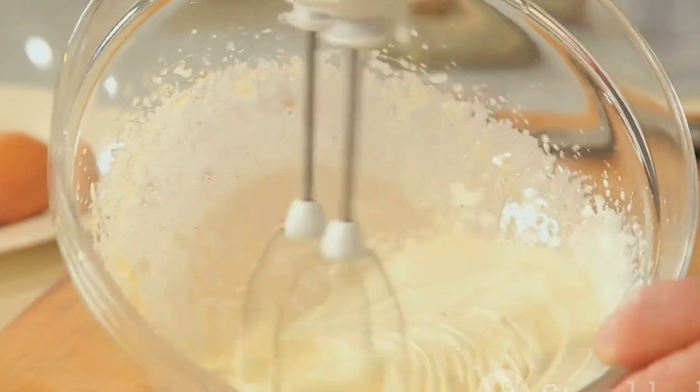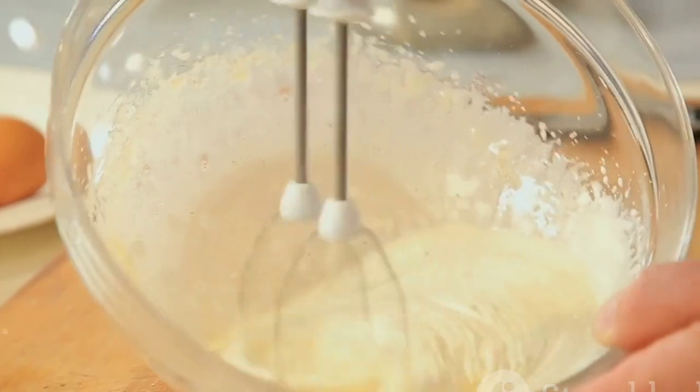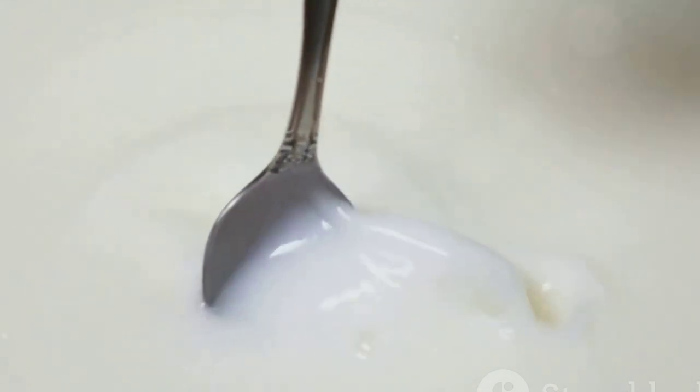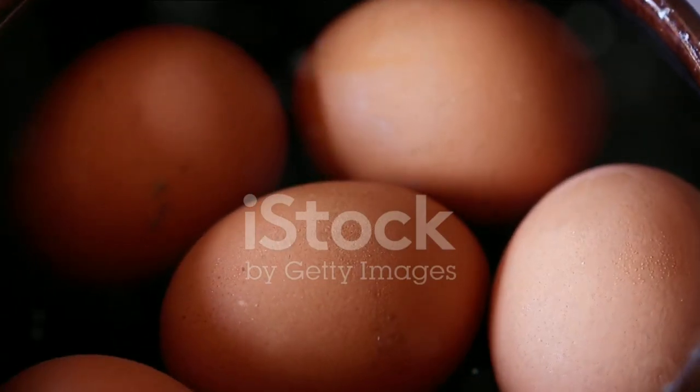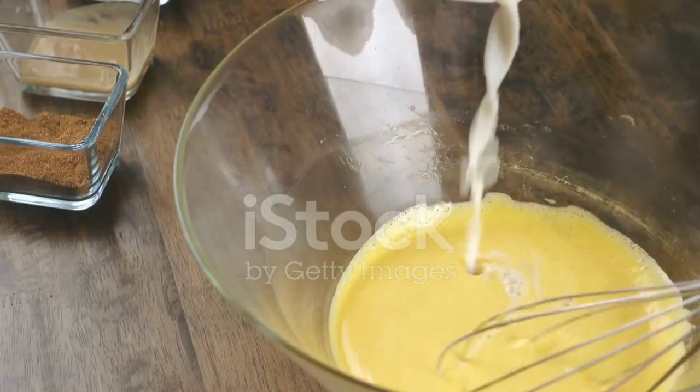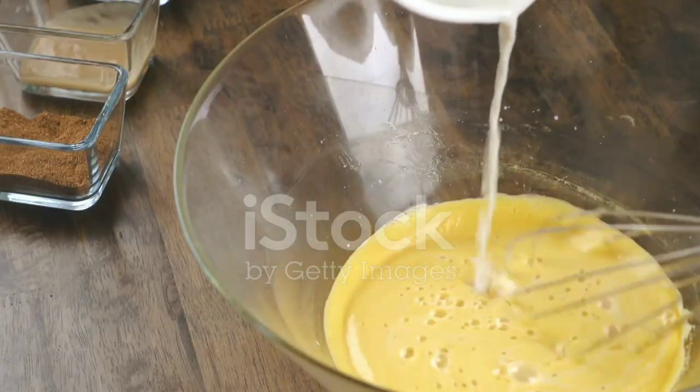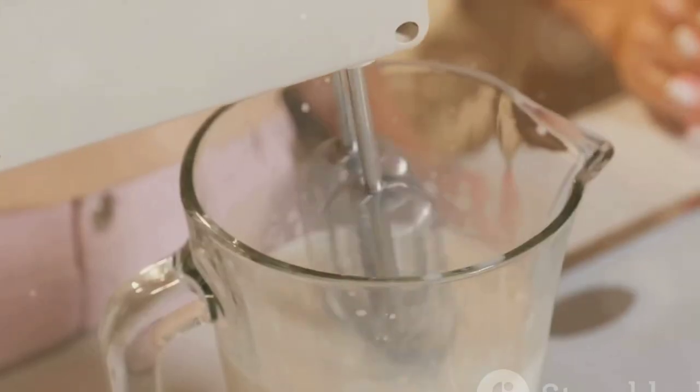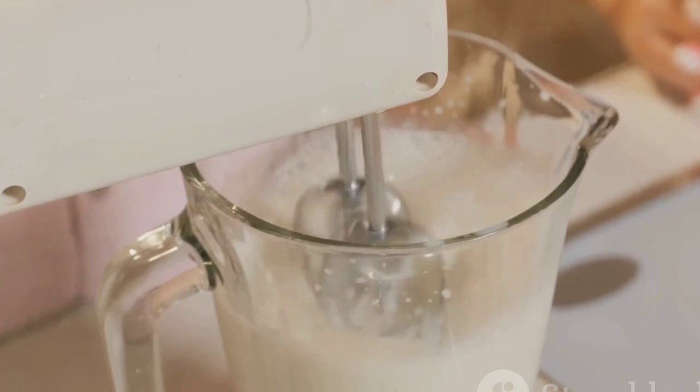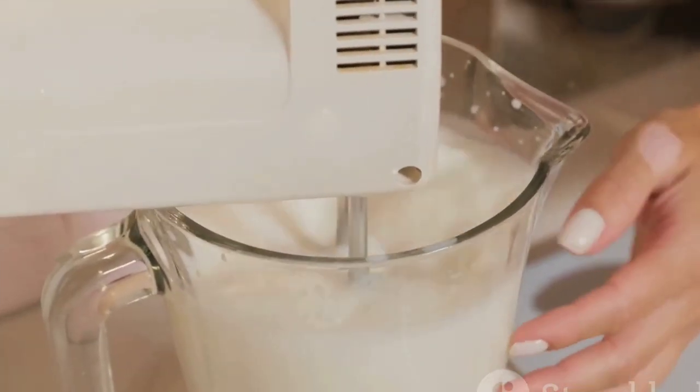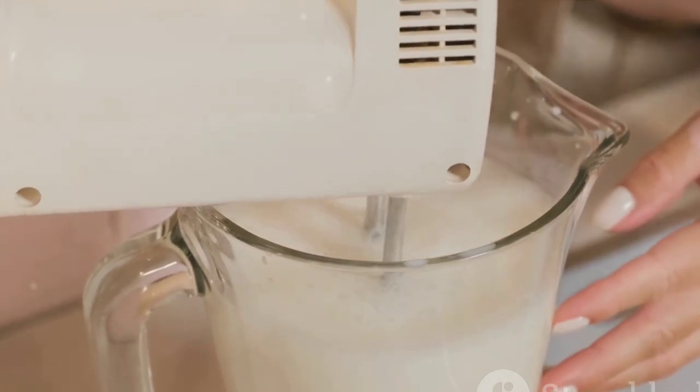Imagine for a moment the process of making eggnog. You start with a set of ingredients—milk, sugar, eggs, and spices. Each ingredient is distinct with its own unique characteristics. When you combine these ingredients, you create something entirely new, a delightful concoction that is more than just the sum of its parts. The final product is unpredictable, varying in taste and texture based on the proportions of the ingredients, the method of mixing, and even the temperature at which it's served.